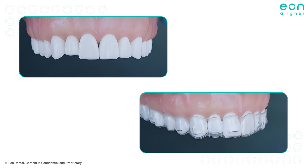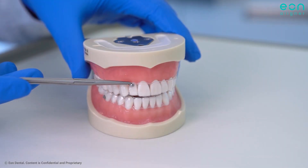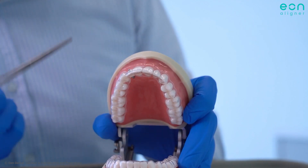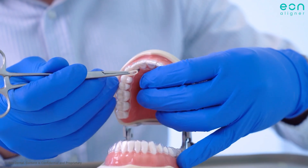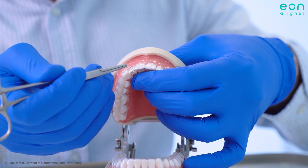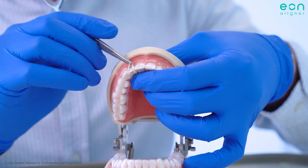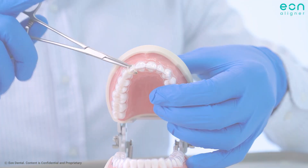A third option is the use of auxiliaries, specially for poor tracking extrusion movements, as shown here. You can simply add cutouts on the gingival third of the labial and palatal sides of the lateral incisor and bond buttons to hook bootstrap elastics from the palatal to the labial side to facilitate extrusion.